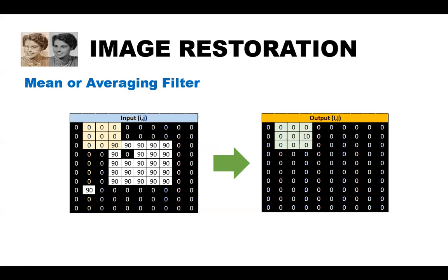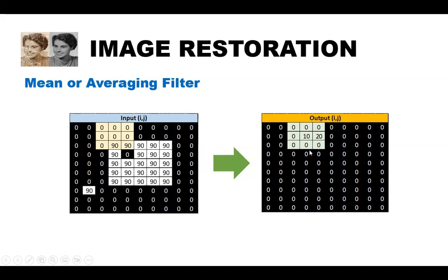The first pixel on the image is 90. Since it is now a member of the box, 90 divided by 9 — since we have 9 inputs — gives an output of 10. The next step gives 90 and 90, that's 180, divided by 9, giving 20. Moving on to the next, 270 divided by 9 gives 30. The process continues in the same manner throughout the image.